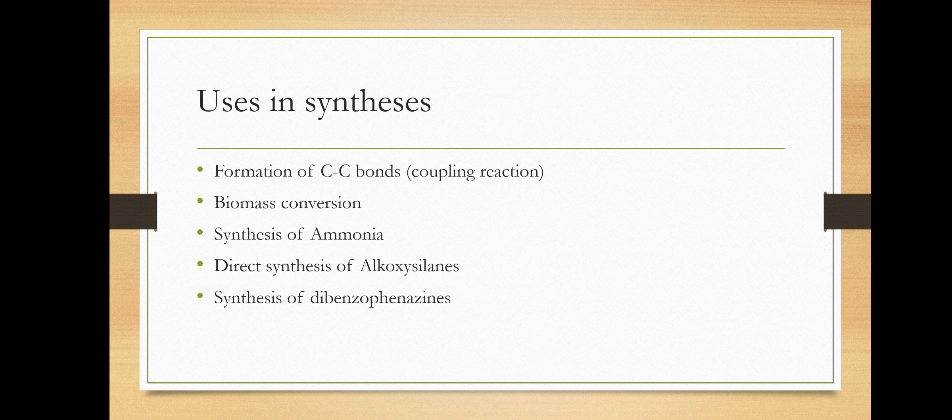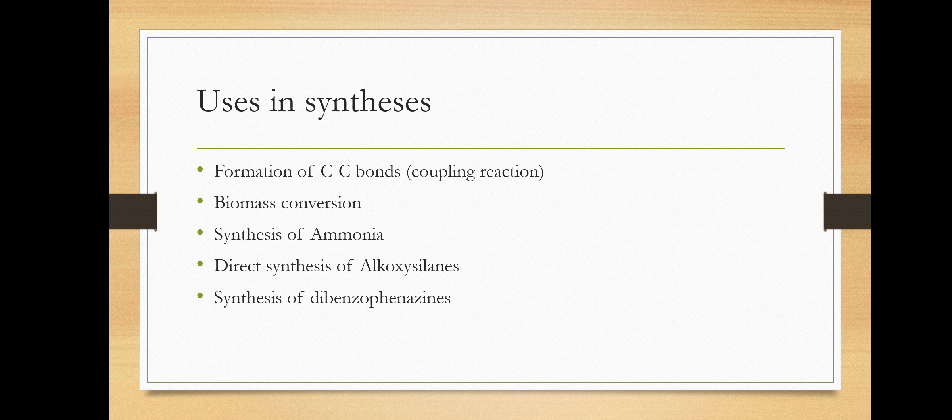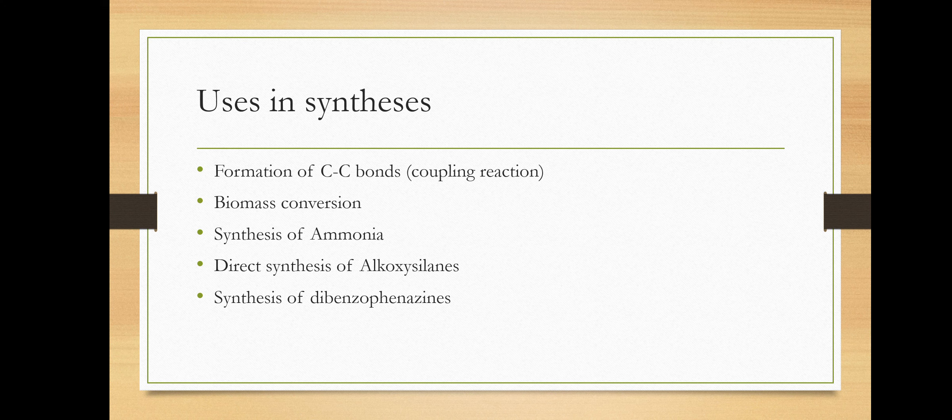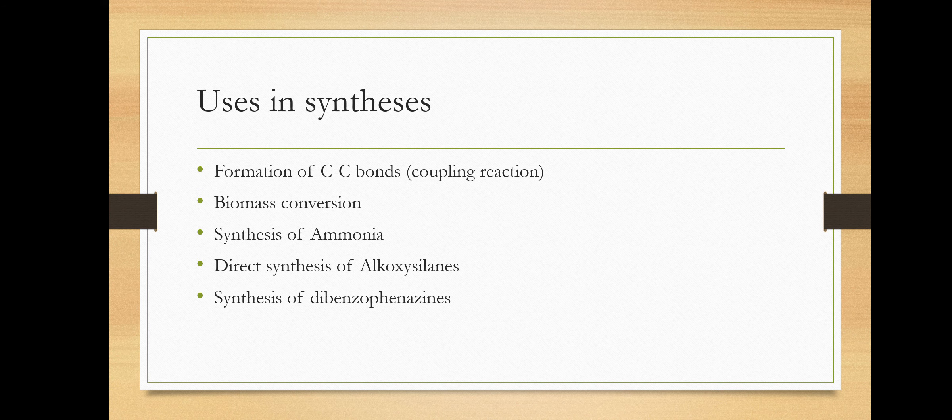Mechanochemistry can be used for various chemical syntheses. For example, the formation of carbon-carbon bonds via coupling reactions, biomass conversion, synthesis of ammonia, direct synthesis of alkoxysilanes without the production of hydrogen chloride-containing waste, and synthesis of dibenzophenazines.